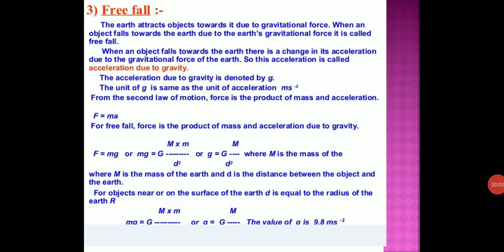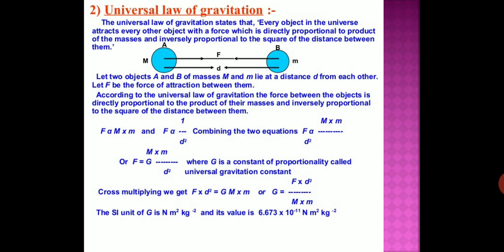Good morning, class 9th, chapter number 10: Gravitation. In our earlier video we discussed the universal law of gravitation and its derivation. It is denoted by capital G and it is a constant. The unit of G is Newton meter squared kg minus 2, and its value is 6.673 multiplied by 10 to the power minus 11 Newton meter squared kg minus 2.